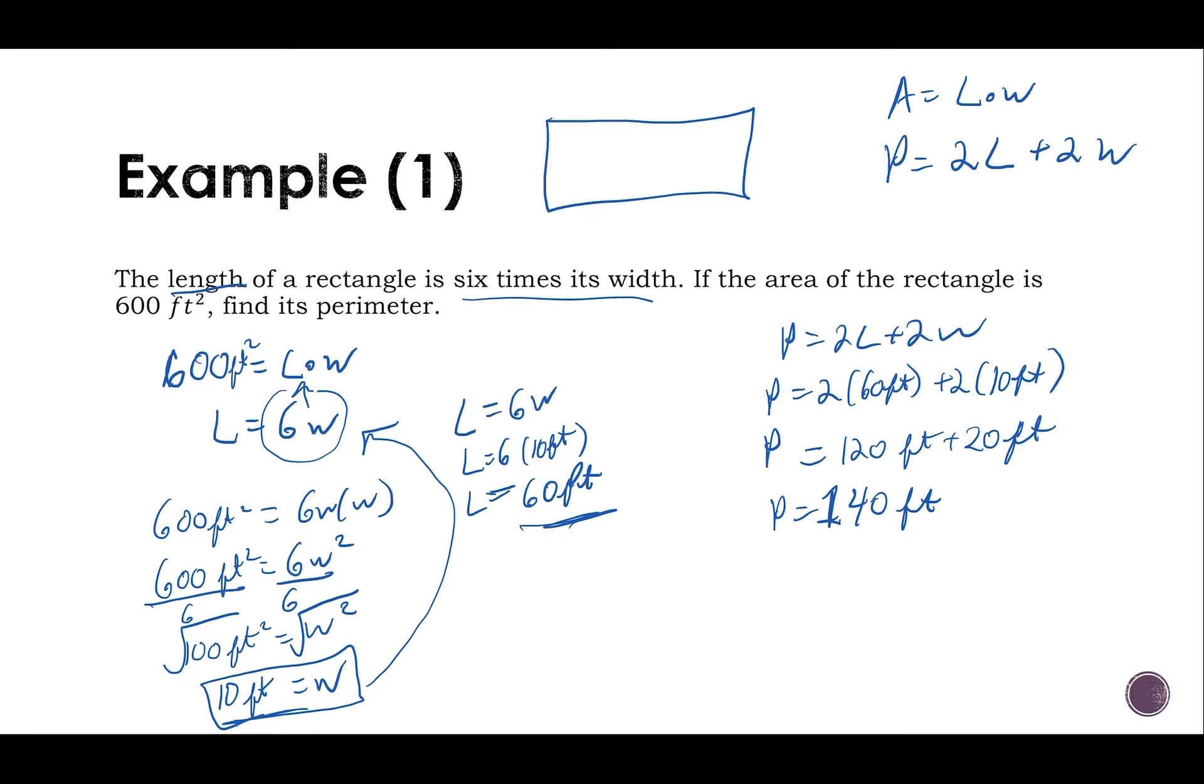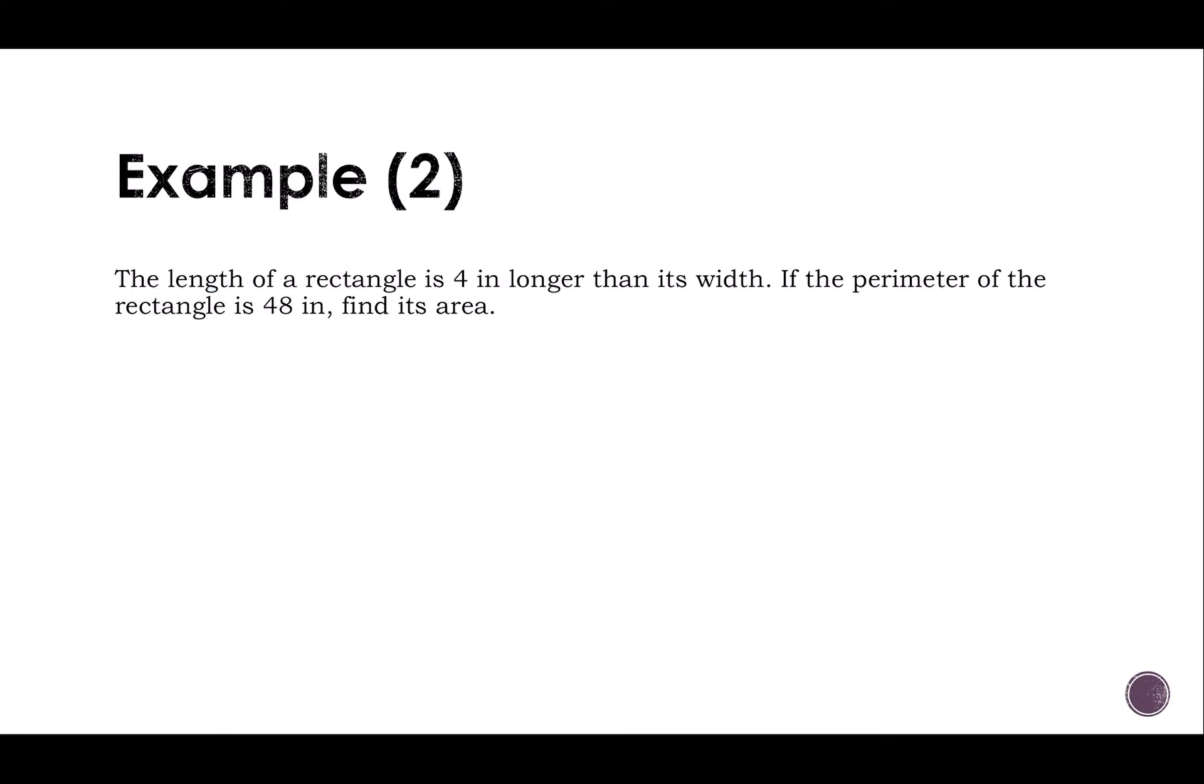Let's work through another example. The length of a rectangle is four inches longer than its width. If the perimeter of the rectangle is 48 inches, find its area. So I know 48 inches is my perimeter. So that's two times my length plus two times my width.